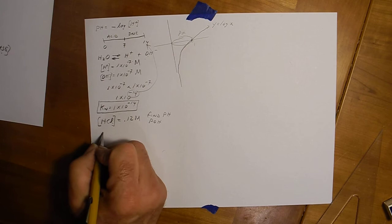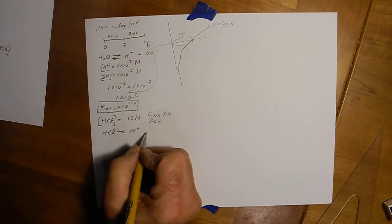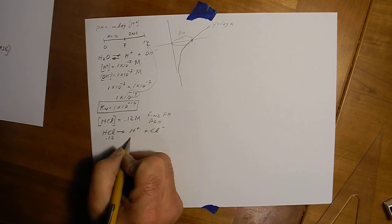Look at the dissociation function. Since it's a strong acid, it 100% splits up. So this guy's 0.12, this guy's 0.12.